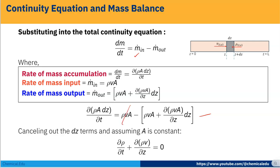Both sides cancel out A, and dividing by dz, we finally get ∂ρ/∂t + ∂(ρv)/∂z = 0. This equation results from the mass balance.